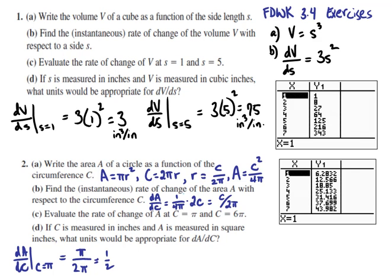Evaluating that when C equals π, we get π over 2π, which is a half. Evaluating when C is 6π, we get 6π over 2π, which is 3. The appropriate units would be the units of the area divided by the units of the circumference, and so that would be inches squared per inch, not inches cubed per inch like the example above.